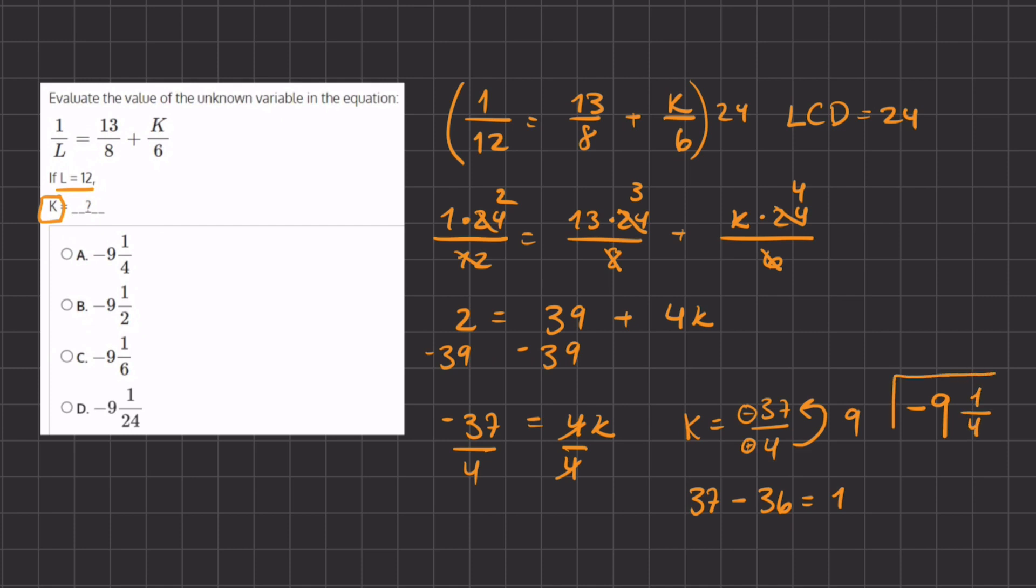So we have negative 9 and 1 fourth as the value of k. That's going to correspond with answer A in our problem.